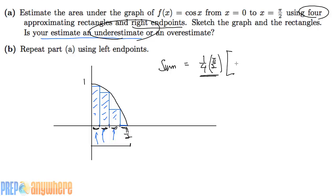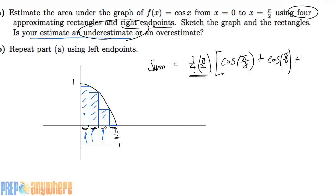So it's going to add up the height in here. The first height is cosine of, this is π/8. Next one is going to be cosine of 2π/8, which is π/4. Next is going to be cosine of 3π/8.